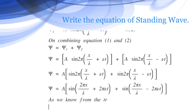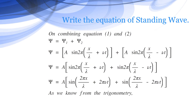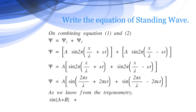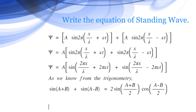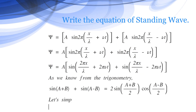From trigonometry we know that sin(A + B) + sin(A - B) equals 2 sin((A + B)/2) cos((A - B)/2). Let's simplify accordingly.